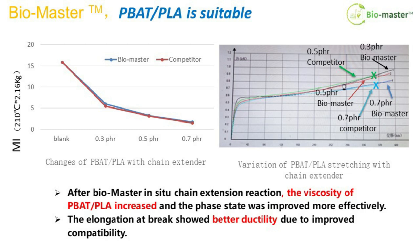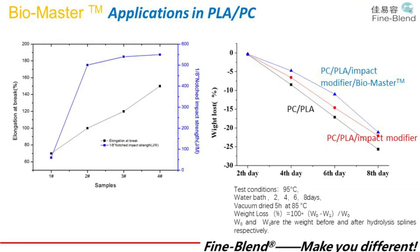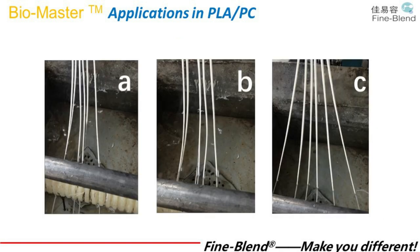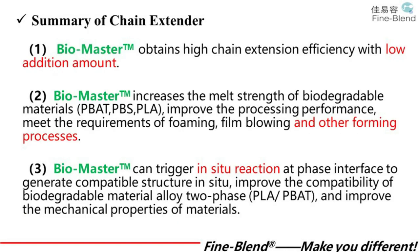Bio Master is also effective in PLA/PC blends, improving hydrolysis stability and compatibility, with the effect becoming better with increasing addition amount. From these results, we can see that Bio Master has good processing stability in PLA/PC applications. In summary, Bio Master chain extender can achieve high chain extension efficiency with low addition amount.